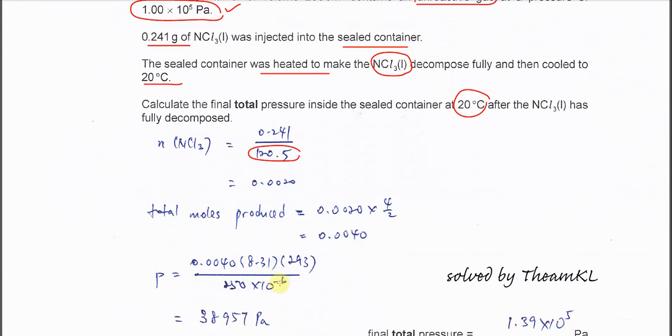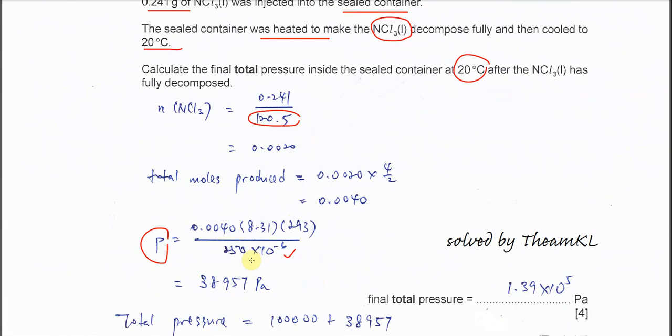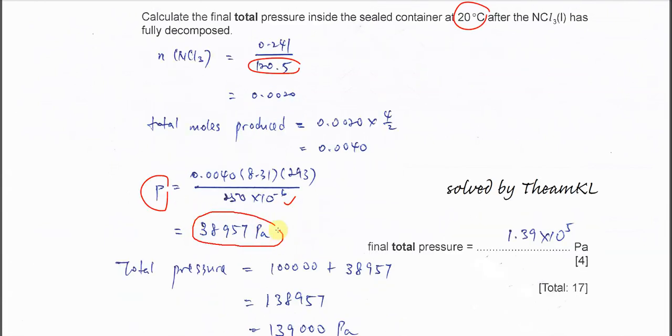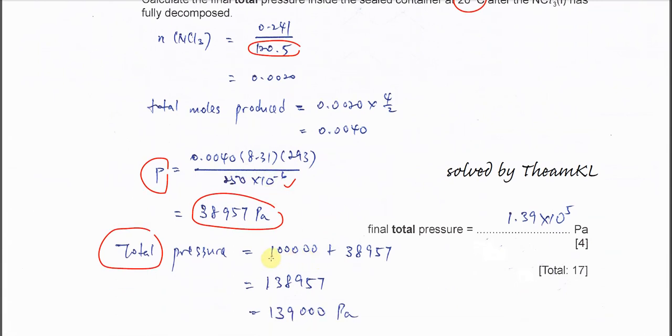Use this mole and the combined gas law to get the pressure. PV equals nRT, so to find pressure, bring the volume to the other side. 0.004 times 8.31 times 293 over this volume. The volume is 250 cm cubed, so it must be meter cubed: 250 times 10 to the -6. It must be all standard units for combined gas law. After you calculate, you get 38957 Pa. This is not the answer because it asks for total pressure. Initially, it has this pressure. So you have to use this pressure and sum up with the pressure you calculated, you get 139000 Pa. That's all for this question. Thank you.